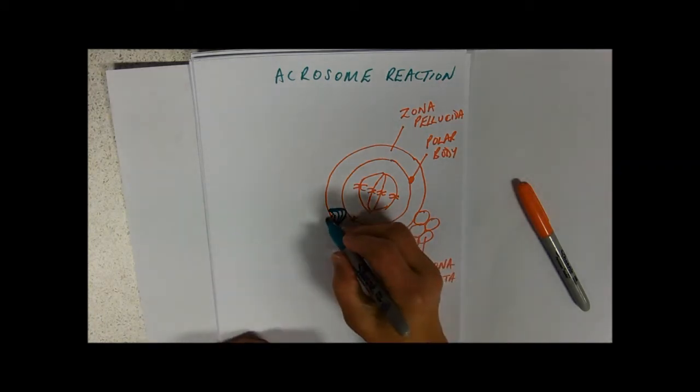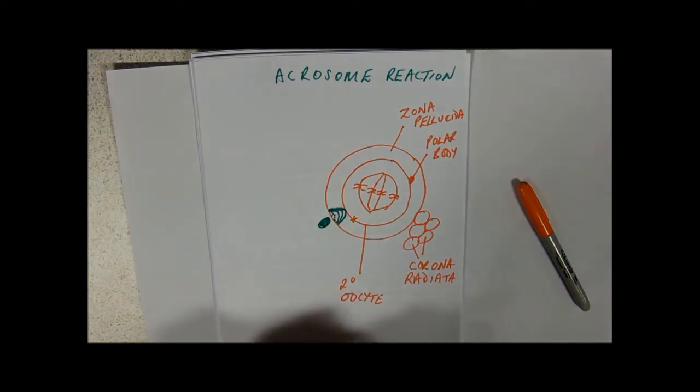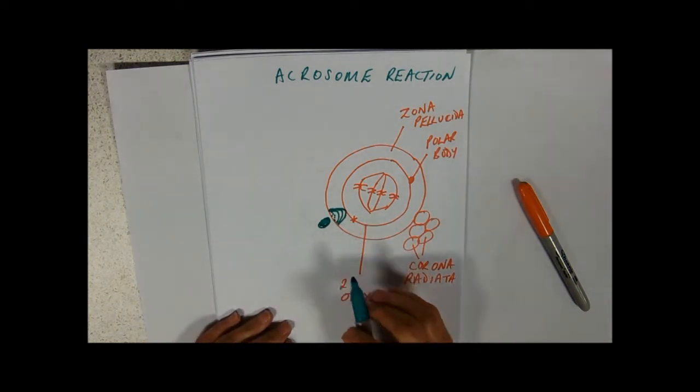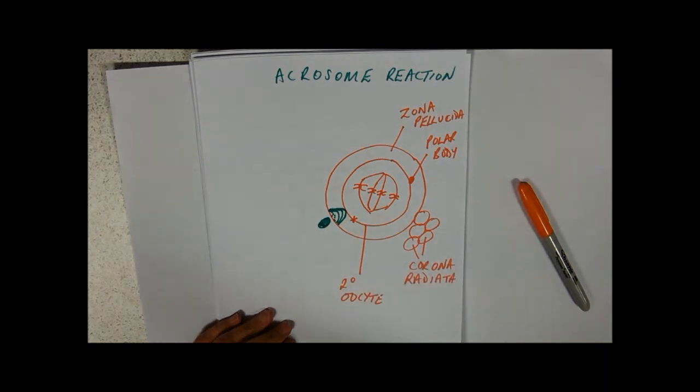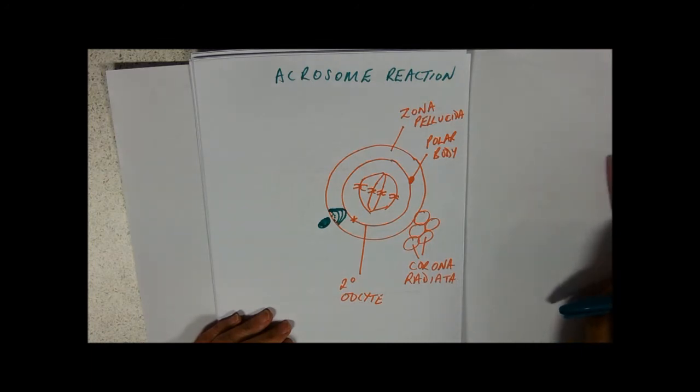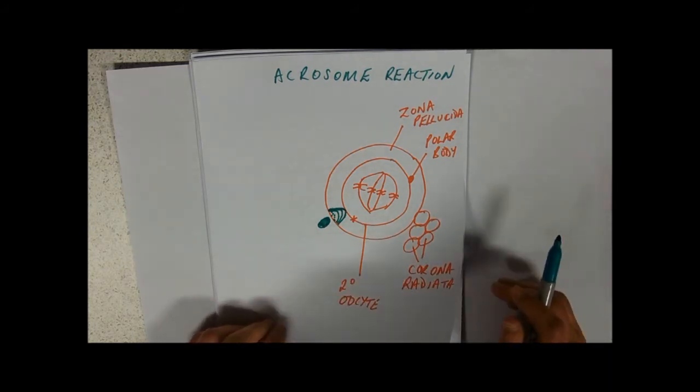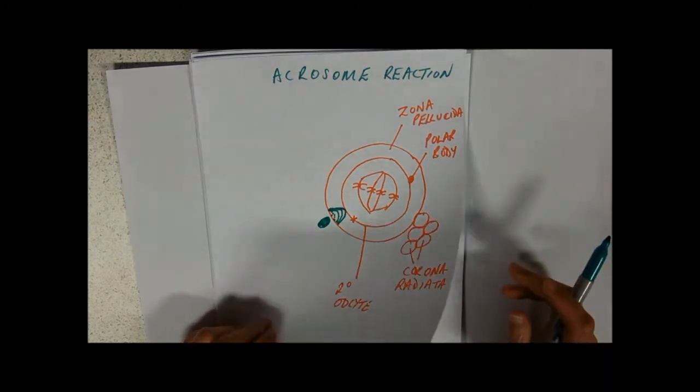So that's the acrosome reaction—that refers to the digestion of the zona pellucida. If you look it up online, there's quite a lot of detail there. You'll see needle-like filaments penetrating through. I don't need to worry too much about that. I think the key thing is the hydrolytic enzymes digesting a pathway through for the nucleus to go down.